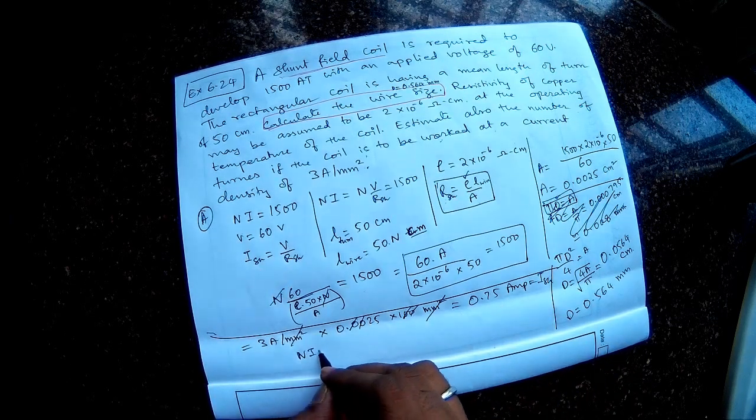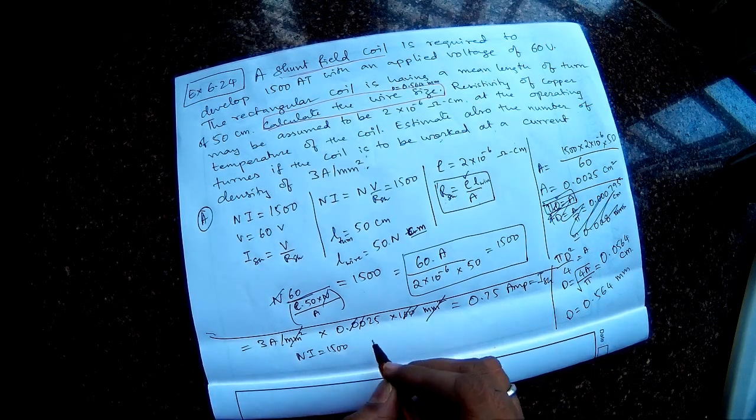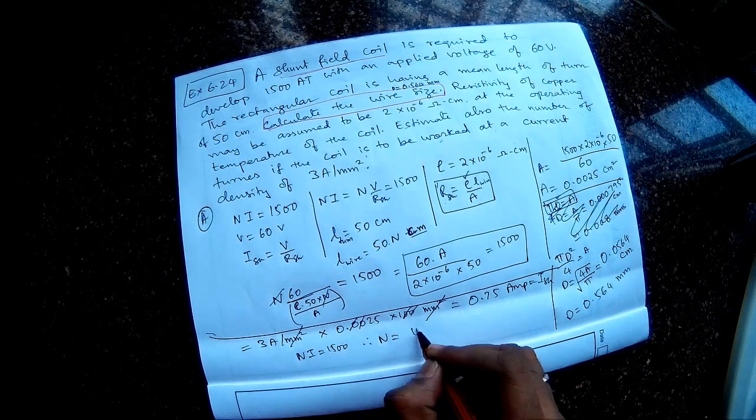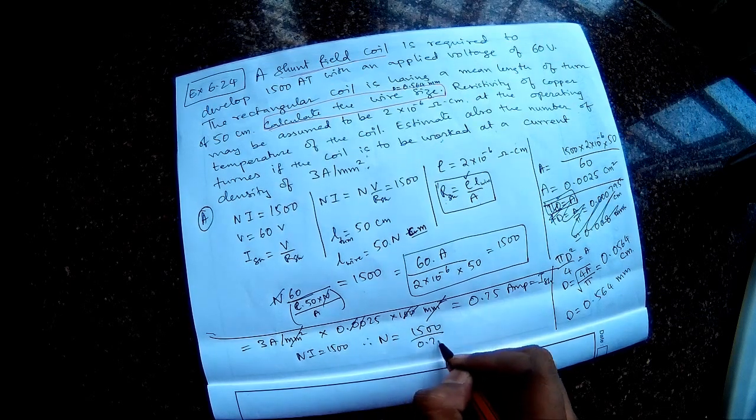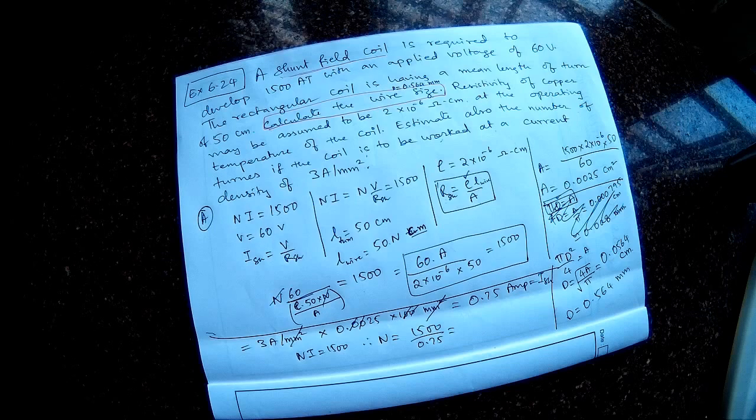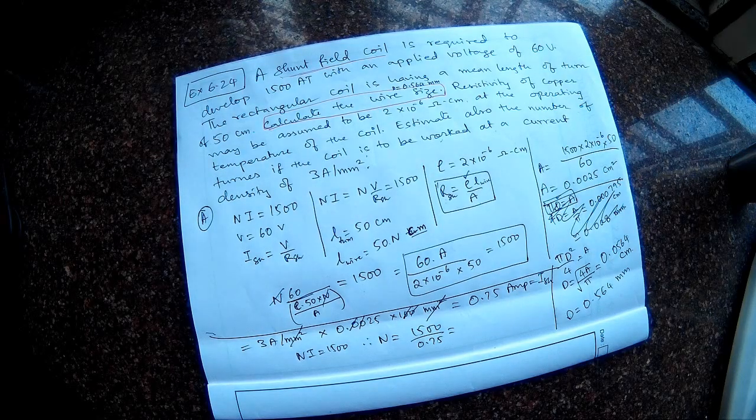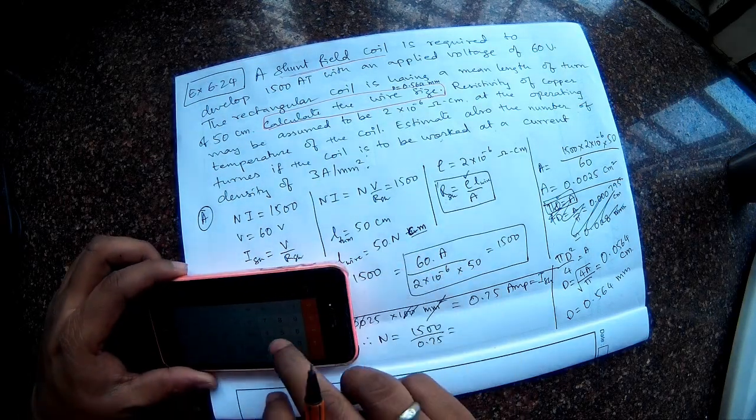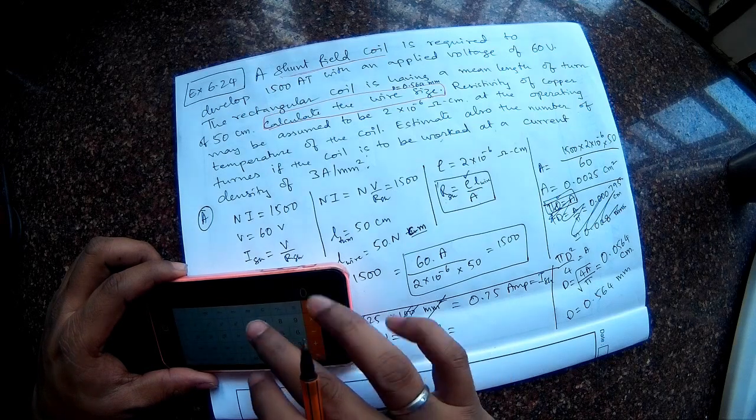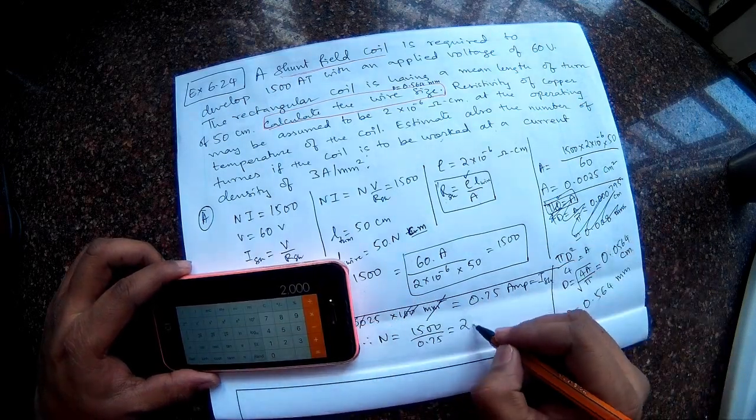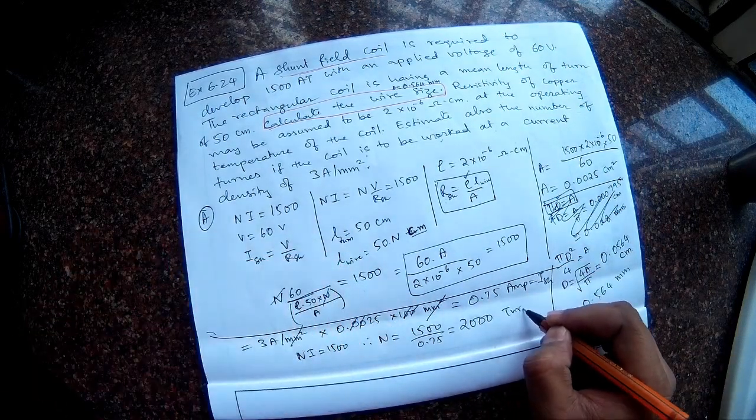So from this I know the ampere-turns. So Ni equal to 1500. So therefore the number of turns required is 1500 divided by 0.75. So let's calculate that. So 1500 divided by 0.75. So that is 2000 turns.